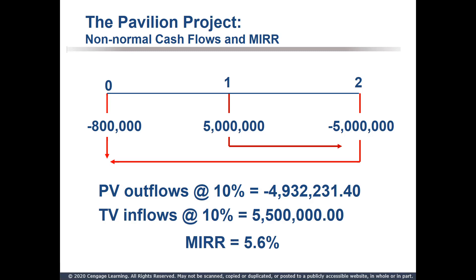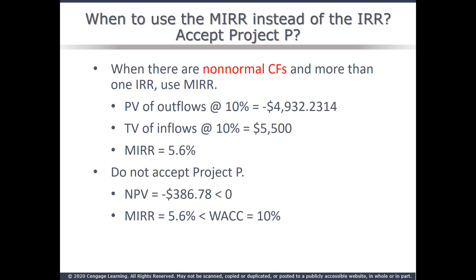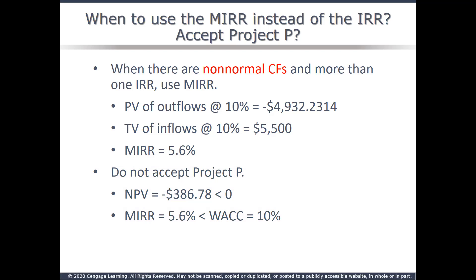Future valuing the $5 million at time 1 equals $5.5 million. N is 2, present value is negative $4,932,231.40, payment is 0, future value is $5.5 million. Compute I/Y: 5.6%. Any time you have more than one sign change, use MIRR. For our pavilion project with an NPV of negative $386.78 and an MIRR of 5.6% versus a cost of capital of 10%, this looks like a no-go. However, the firm may decide to go ahead anyway, knowing they'll lose almost $400,000, for strategic reasons — similar to McDonald's going into China, which was probably not a positive NPV project but was pursued for strategic advantage.